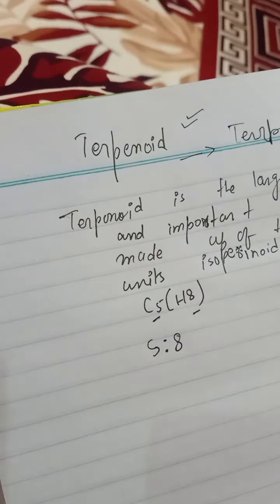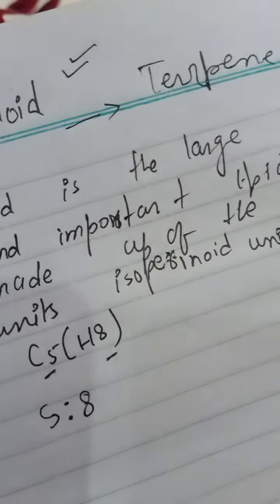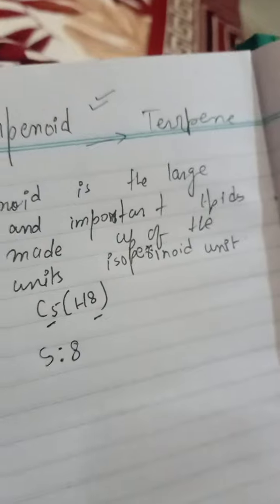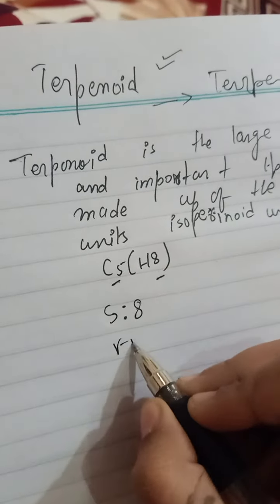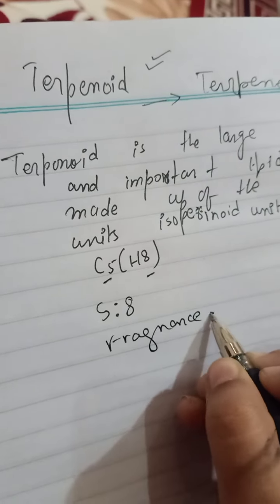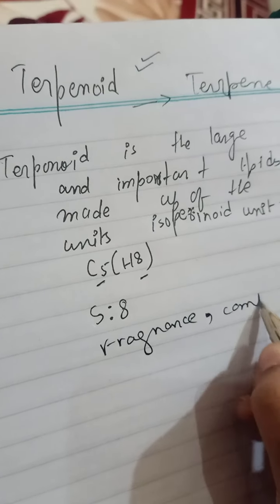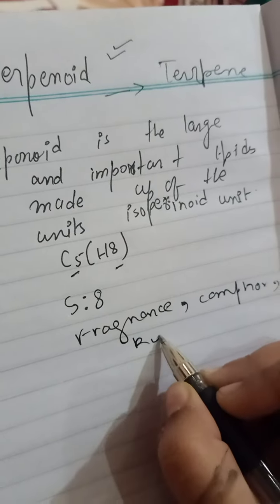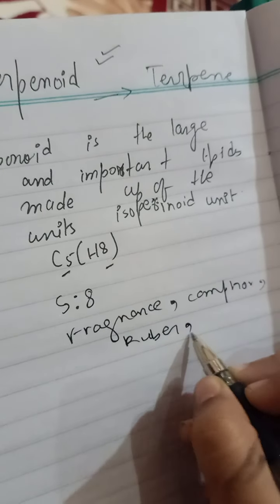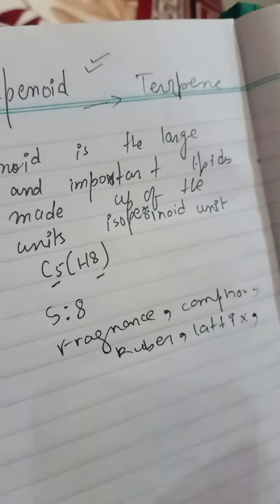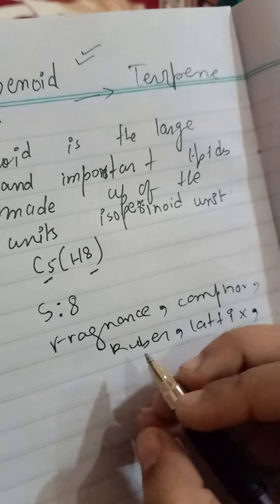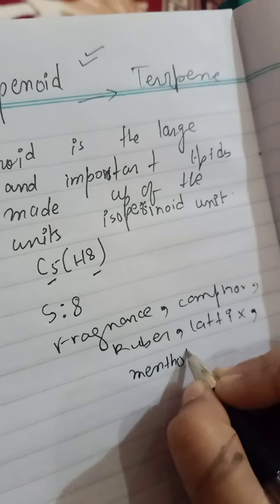Terpenoid is a group, and the subunits are called terpenes. Examples of terpenoids include fragments of camphor, rubber, and latex, as well as menthol.